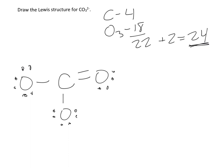And this is what I would have. That would be the final picture here. I'd put brackets around it. And I'd write 2 minus. And this is the Lewis structure for CO3 2 minus.